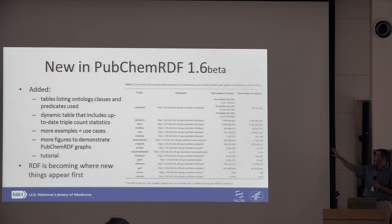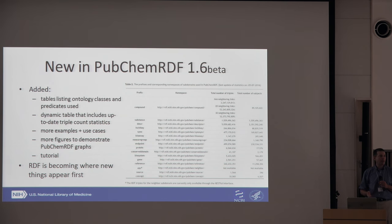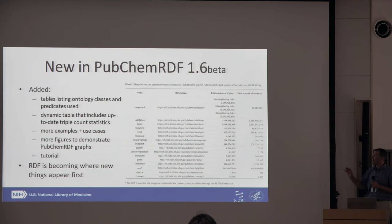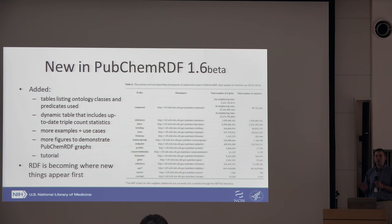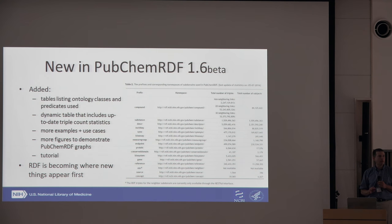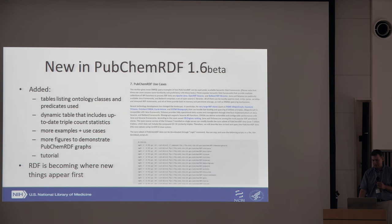We also have a dynamic triple count — we're just shy of 100 billion triples at this point. We keep trying to find ways to economize and allow you to infer triples rather than express them explicitly, and that is really a limiting factor for how much we can put into this resource. We could expose a lot more of PubChem RDF today, however it would probably be too much for you to download and use.